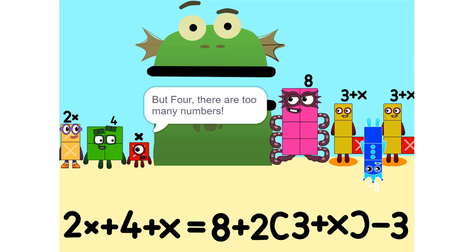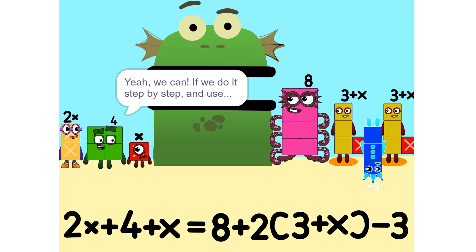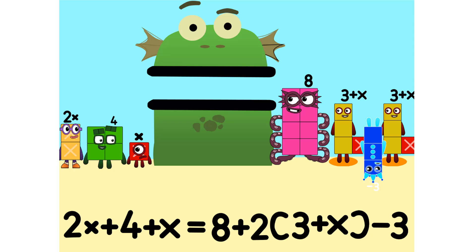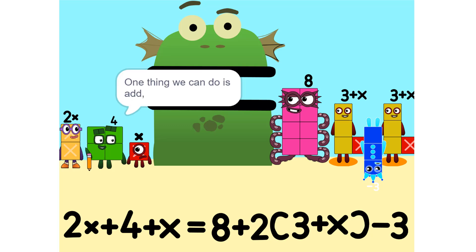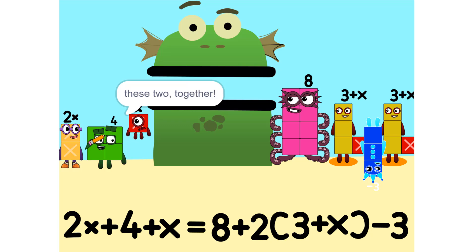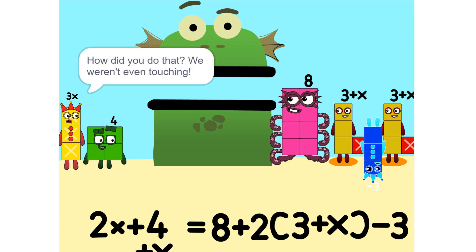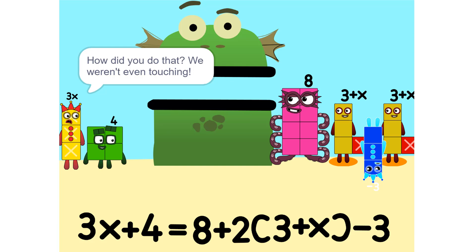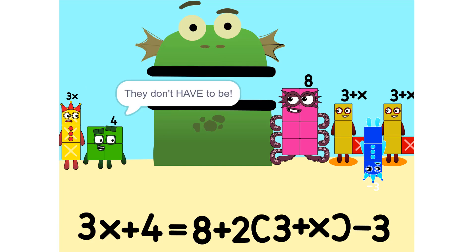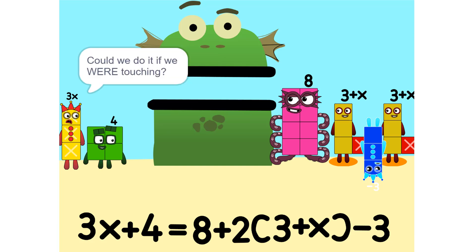Now we can figure out your value. But there are too many numbers — we'll never figure it out. Yeah, we can. If we do it step by step and use a pencil. So let's get started. One thing we can do is add these two together. How did you do that? We weren't even touching. They don't have to be. Could we do it if we were touching? Yeah.